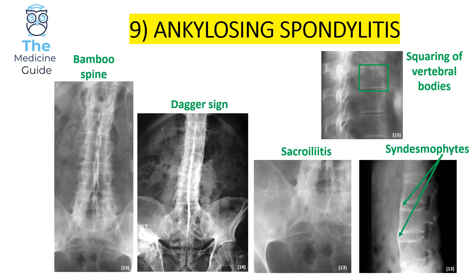This demonstrates the different types of images that could appear for ankylosing spondylitis. The image from the previous question was that of a bamboo spine, representing fusion of the vertebral joints — a classic feature of ankylosing spondylitis. The dagger sign is another feature, where there is ossification of the supraspinous and interspinous ligaments. Patients are also at risk of developing sacroiliitis, with areas of subchondral sclerosis and subchondral erosions visible on x-ray.